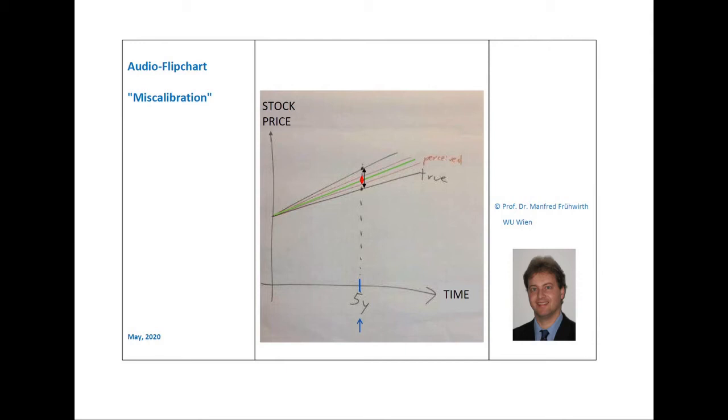The higher the probability P that you select, the wider the confidence interval has to be. Therefore, the forecast in green is surrounded by a lower boundary line and an upper boundary line.